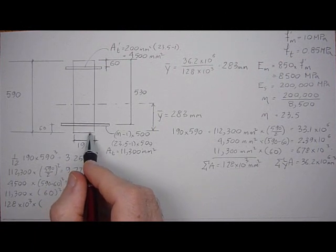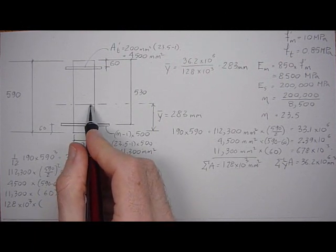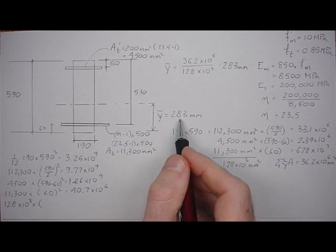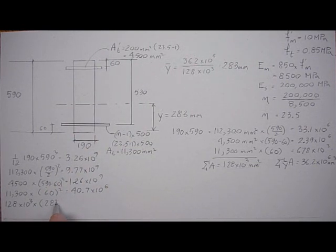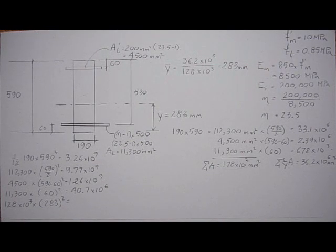We calculated the inertia about this base, so we'll take it up to the true neutral axis here, 283 squared, so 128 e to the third times 283 squared, 10.3 e to the ninth, and that's a negative value.